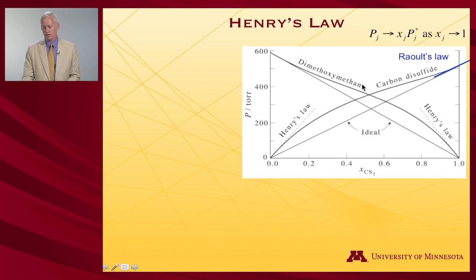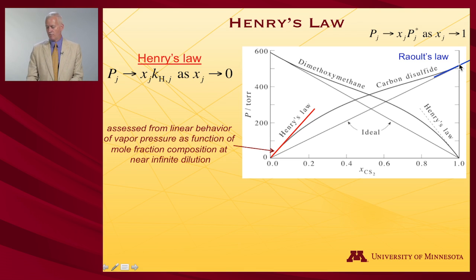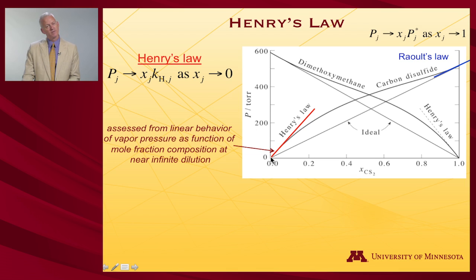Raoult's law says that the vapor pressure of component J is just the pure liquid vapor pressure times the mole fraction. As the component itself approaches purity, we do see an asymptotic approach to Raoult's law behavior — I've drawn this blue line here, which overlaps the black line. Here's carbon disulfide: as its mole fraction increases, it approaches that Raoult's law line asymptotically. There's a different asymptote over at the other end: as I reduce the carbon disulfide to near infinite dilution and assume linear behavior of the vapor pressure, I can draw a different line. I'm just taking the slope as I get near infinite dilution.